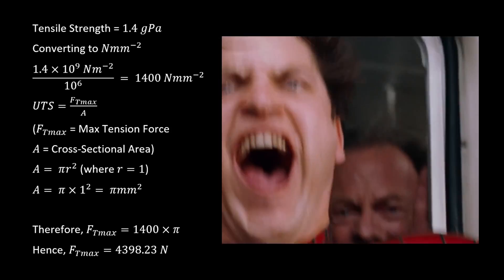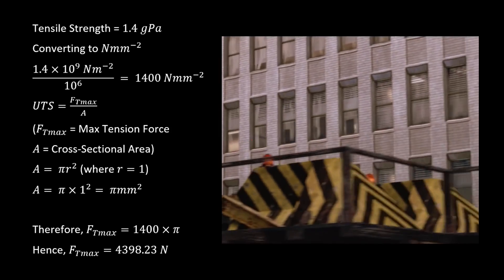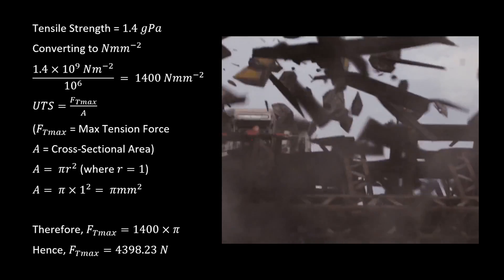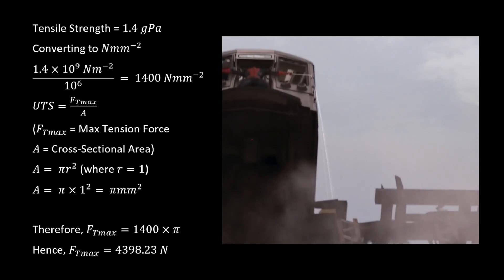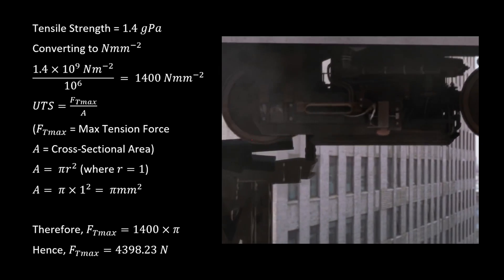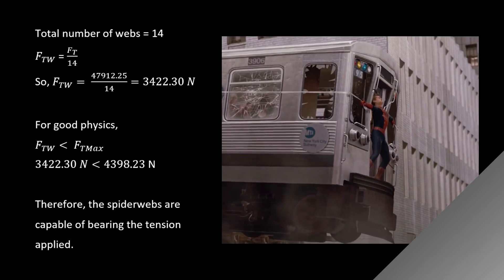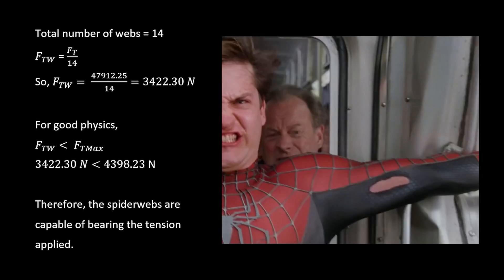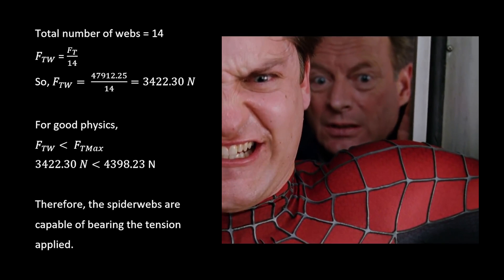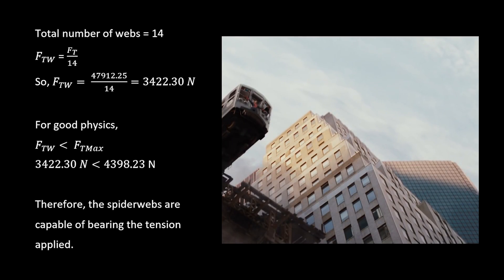The tensile strength formula is max tension divided by cross-sectional area of the web, which is a circle with 1 mm radius and hence an area of 5 mm². By converting tensile strength, the webs can bear a max tension of around 1400 N per mm², and proportionally the max tension force for 5 mm² comes to around 4398 N. Based on the total tension applied on the webs in the scene, we can divide that by 14, the number of webs, to find the tension applied per web, and the result is clearly less than the max tension that the webs can bear.